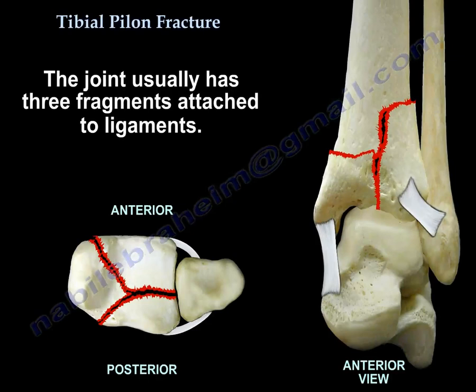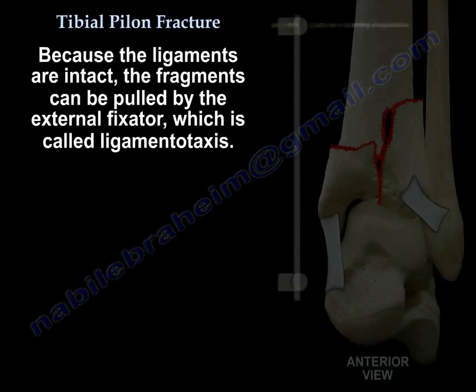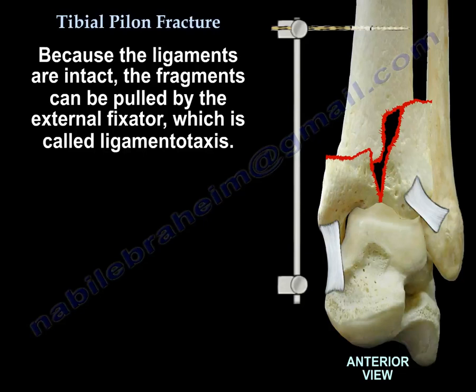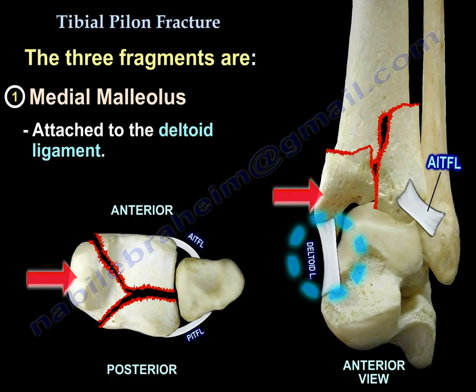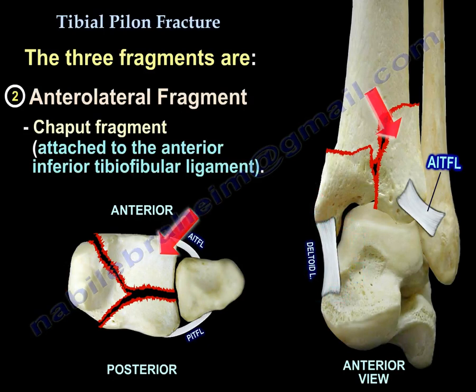The joint usually has three fragments attached to ligaments. Because the ligaments are intact, the fragments can be pulled by the external fixer — this is called ligamentotaxis. The three fragments are: the medial malleolus, which is attached to the deltoid ligament, and the anterolateral fragment, which is called the Chaput fragment, attached to the anterior inferior tibiofibular ligament.